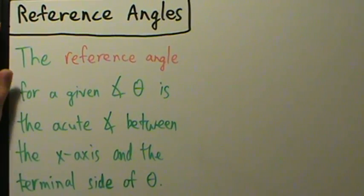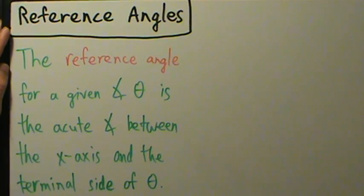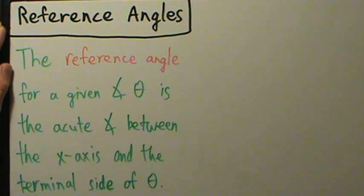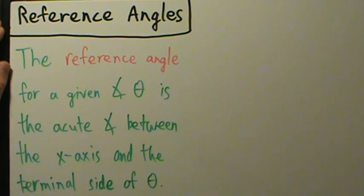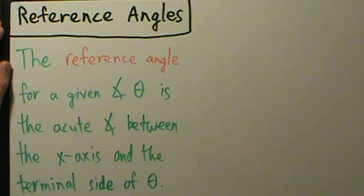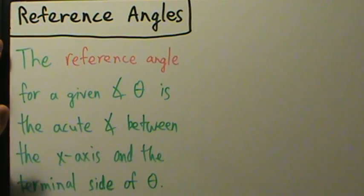Let's go ahead and start talking about reference angles. Reference angles are an important concept in trigonometry. They help you evaluate trig functions for larger angles, more unusual angles, or negative angles. We've already talked about a few techniques for some of those — the even-odd properties, the periodic properties, and coterminal angles. Reference angles are another concept we could apply, and it works more generally.